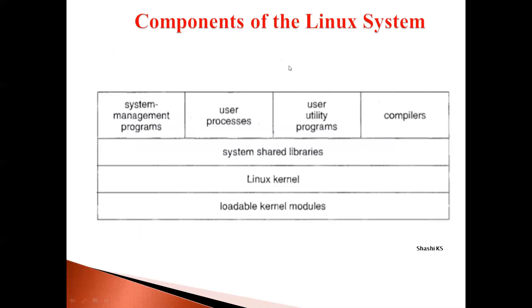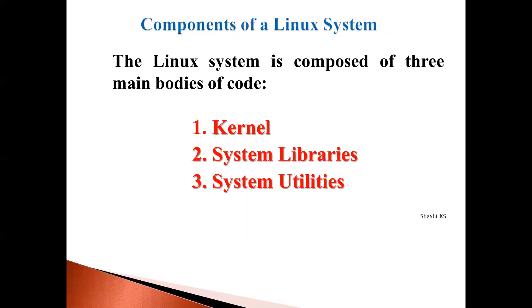The components of the Linux system, as shown on screen, can be divided into three categories. At the bottom-most level, we have the Linux kernel and the loadable kernel modules. The middle layer consists of the system libraries. Above the system libraries, we have the system utilities, system management programs, and user processes. So the Linux system is composed of three main bodies of code: kernel, system libraries, and system utilities.